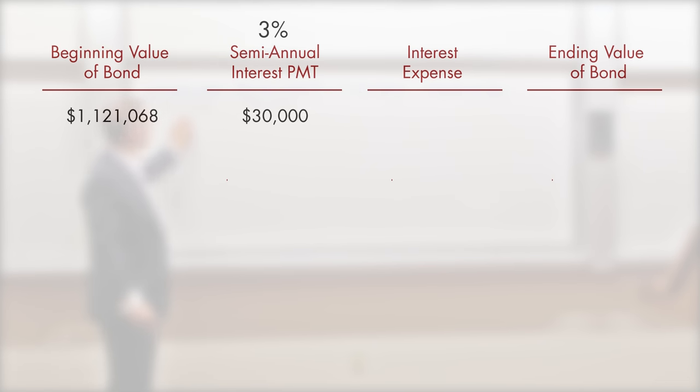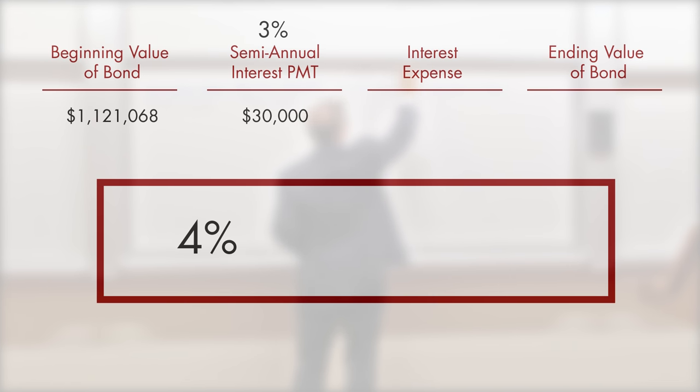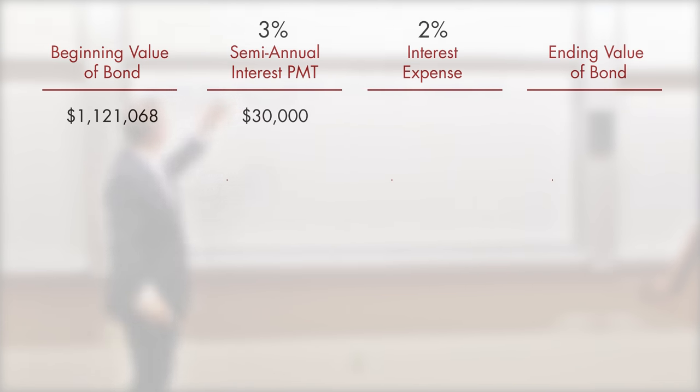The interest is based upon the value of the bond and the market rate. The market rate for similar bonds is 4%, semi-annual 2%. We take 2% of the beginning value of our bond. And when we multiply that out, we find that the interest expense is different. It's $22,421. We subtract these two and we find that the difference between the cash out the door of $30,000 and the interest expense of $22,421 is $7,579. We subtract that difference from our beginning value to get the ending value of our bond. The ending value of our bond after we make that subtraction is $1,113,489.